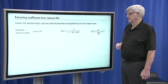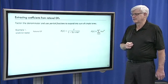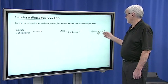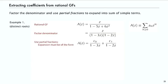Here's a simple example. If we have the rational generating function Z over 1 minus 5z plus 6z squared — it's complex — and we're interested in the coefficient of z to the n, what we do is factor the polynomial in the denominator. In this case it factors as 1 minus 3z times 1 minus 2z. Then, using partial fractions, it separates into the form C0 over 1 minus 3z plus C1 over 1 minus 2z. This is called the method of undetermined coefficients.